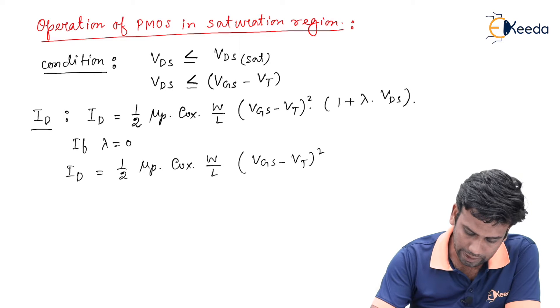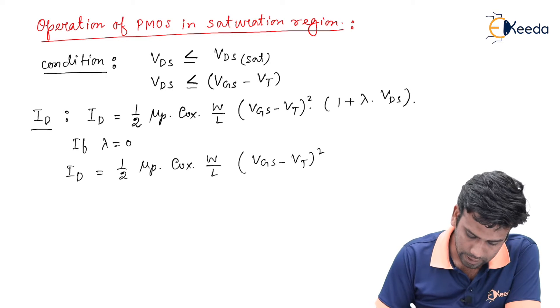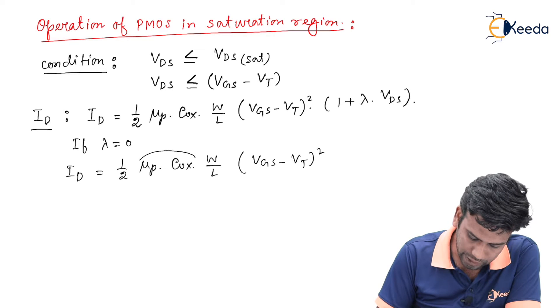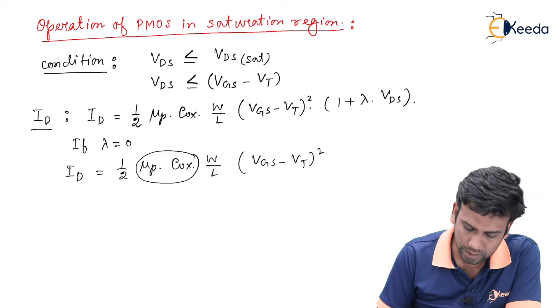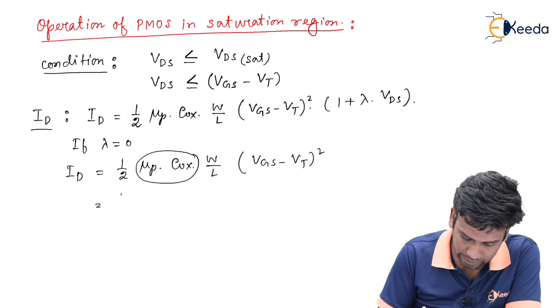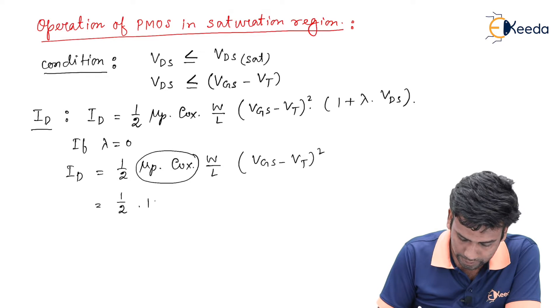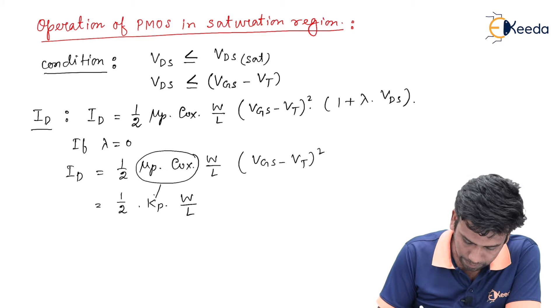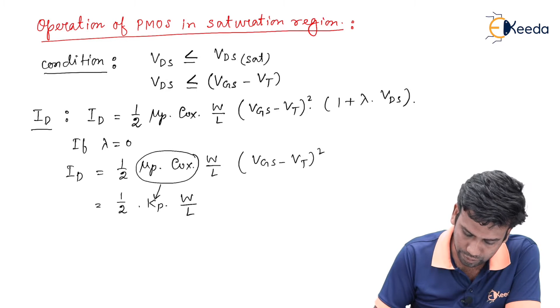We can write it as K_P W by L where K_P equals mu_P into COX.